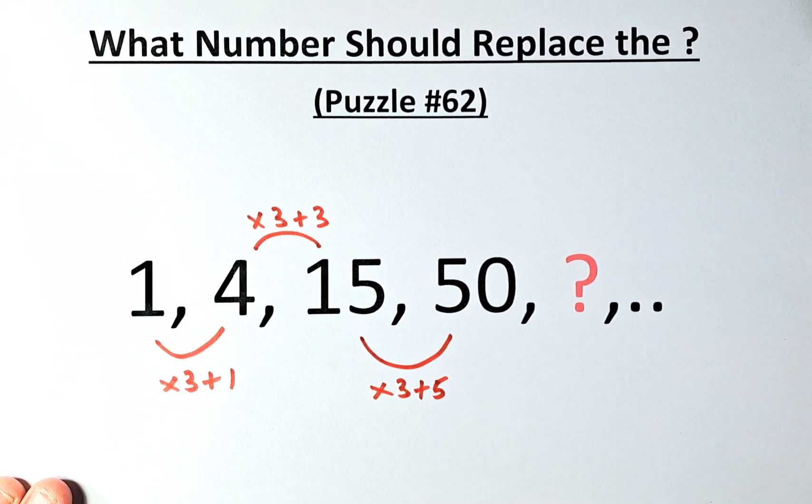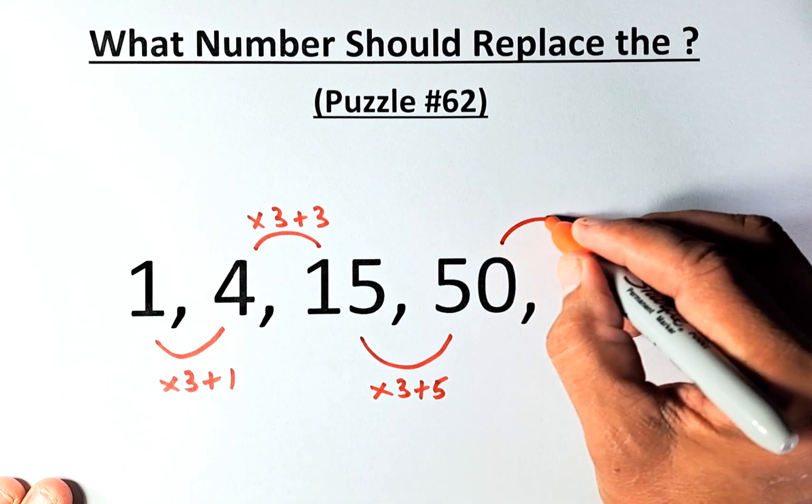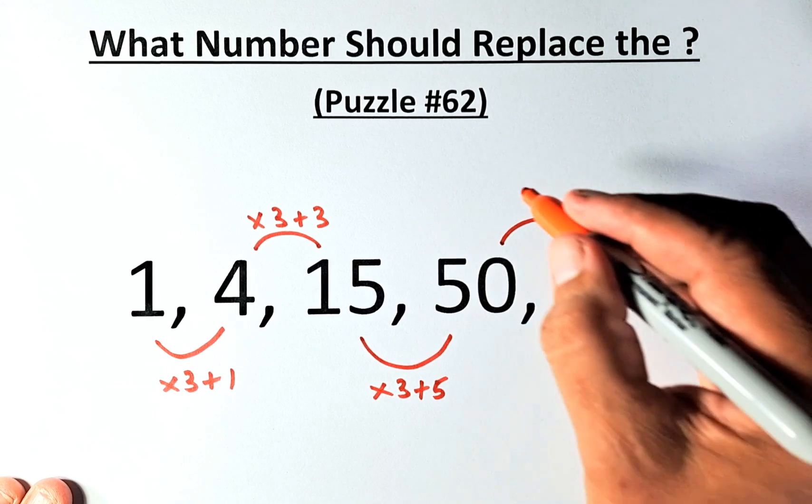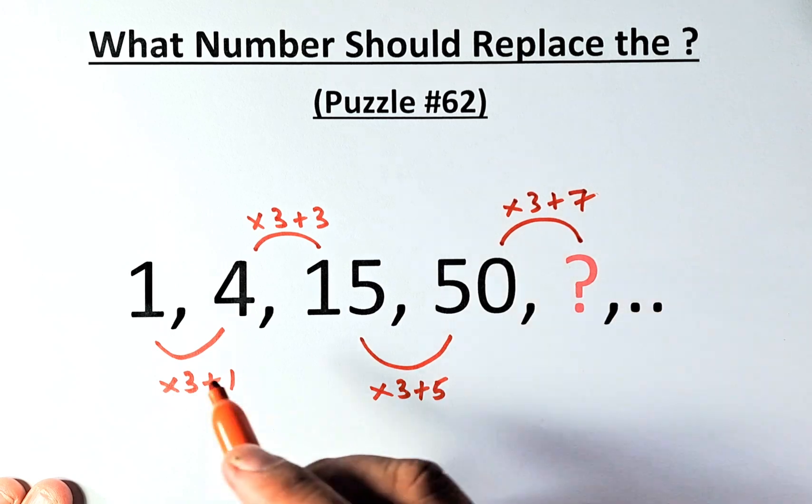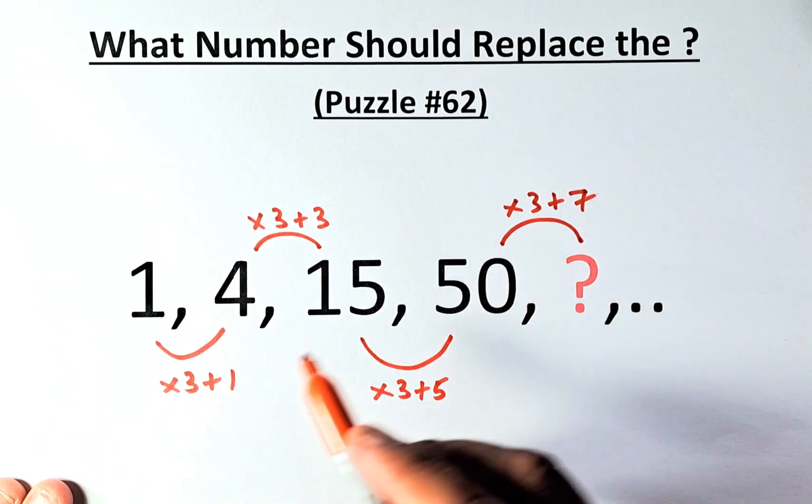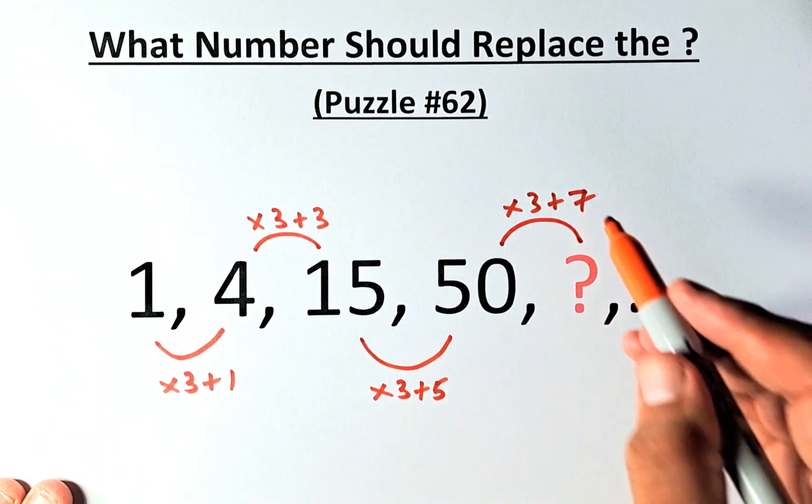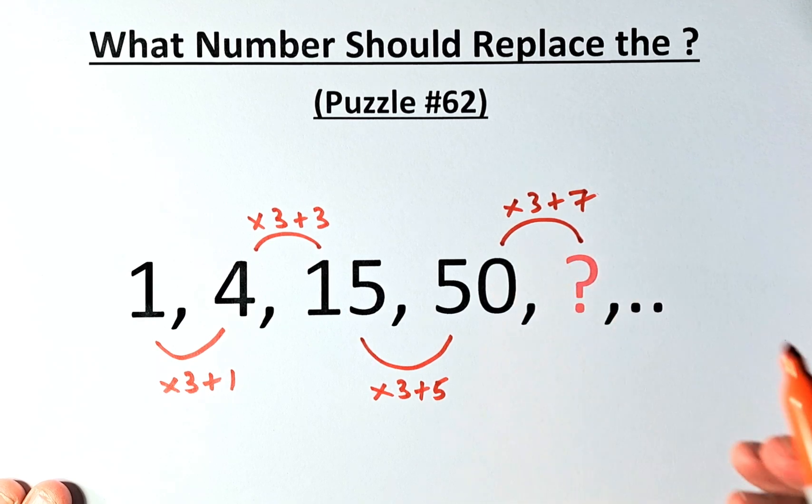So for our solution to the question mark, from 50 to the question mark, we're going to multiply by 3 and add 7, because we add 1, 3, 5, and the last number should be 7. So 50 times 3 is 150, 150 plus 7. The question mark is going to be 157.